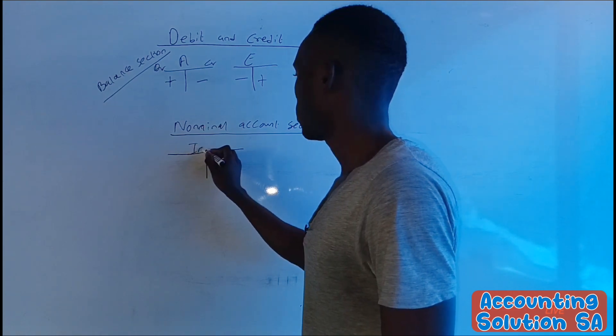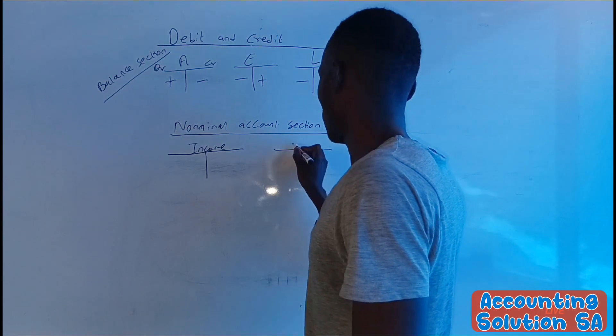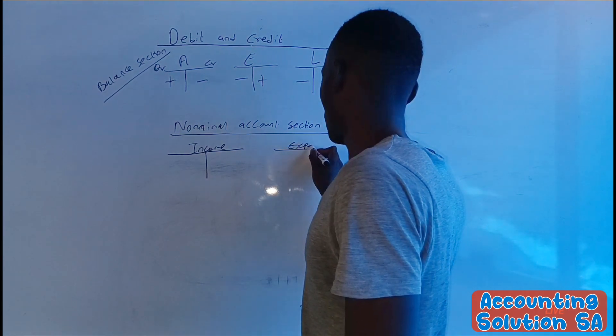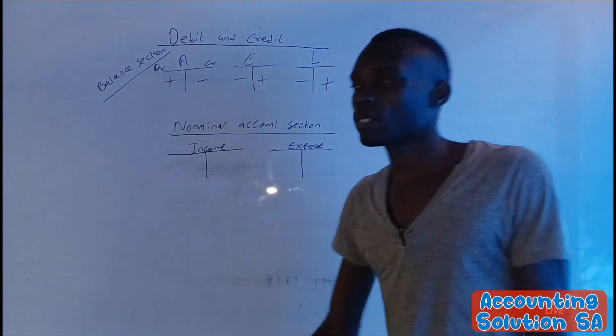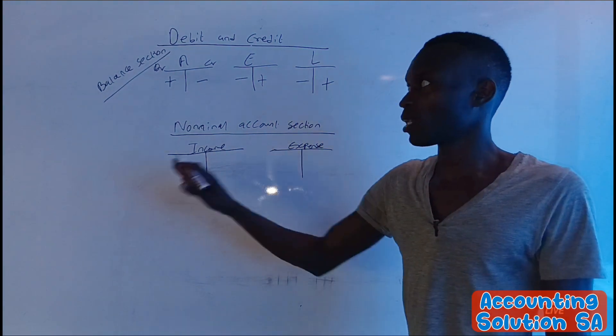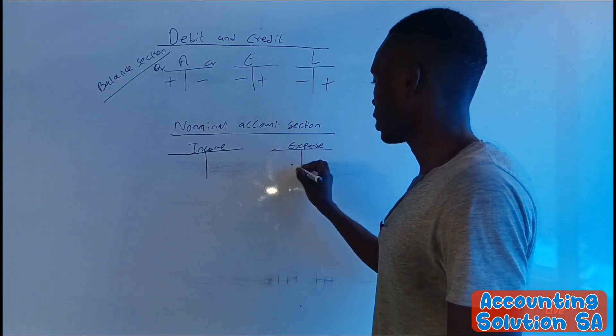We have income and we also have expense. So these accounts don't have the similar sign. The reason is because under expense is plus minus, this side is minus plus. So never ask someone what is debit and what is credit without specifying the account.